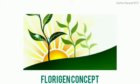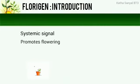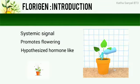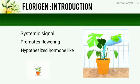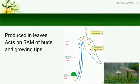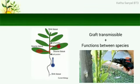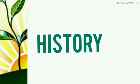Florigen is a systemic signal that promotes flowering. It is the hypothesized hormone-like molecule responsible for controlling or triggering flowering in plants. Florigen is produced in the leaves and acts in the shoot apical meristem of buds and growing tips. It is known to be graft transmissible and even functions between species.